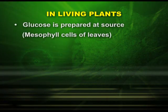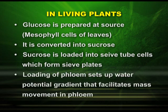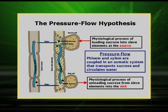In the same way, in living plants we can explain the transport of substances through phloem: glucose is prepared at the source, that is the mesophyll cells of leaves; it is converted into sucrose; the sucrose is loaded into sieve tube cells, which form sieve plates; and the loading of phloem sets up a water potential gradient that facilitates mass movement in phloem. To conclude, the pressure flow hypothesis explains loading of sucrose into sieve elements at the source, the coupling of phloem and xylem in an osmotic system that transports sucrose and circulates water, and the unloading of sucrose from sieve elements into the sink. The translocation of substances through phloem takes place by the pressure flow hypothesis.